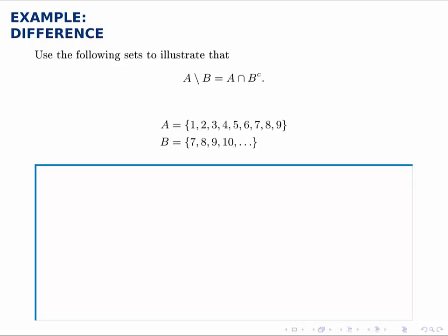Use the following sets to illustrate that the set difference A minus B equals the intersection of A and B complement. So what we'll do is we'll calculate each side of this separately and show that we get the same answer both ways.